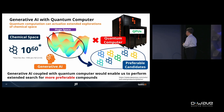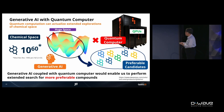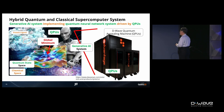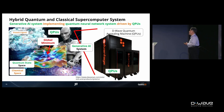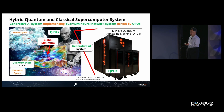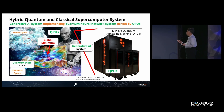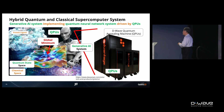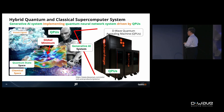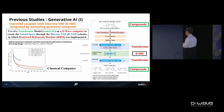If we use the quantum annealing computer, we can explore a much larger space and approach toward the global minima — not exactly the global minima, but much closer. This is very important for solving the problems found in current AI technologies.